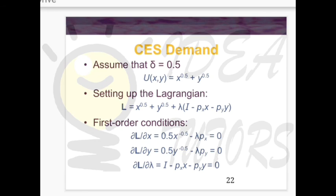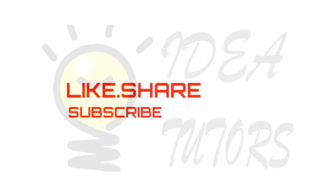By solving, you get values of x and y — these are the quantities of good X and good Y that maximize the consumer's utility. If the consumer purchases x-star and y-star of good X and Y respectively, the utility received will be the maximum possible given their utility function. This was a short video on the Lagrange multiplier; utility maximization graphical conditions were covered in a previous video on my channel.